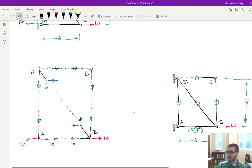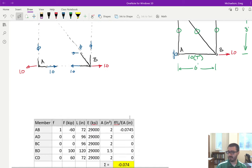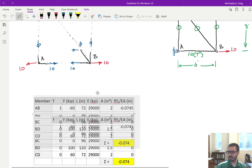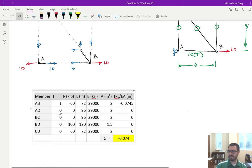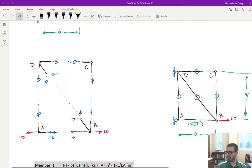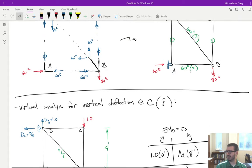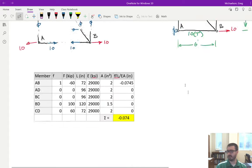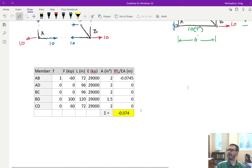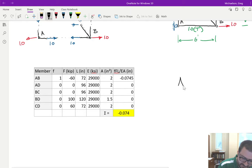So when you start doing your virtual work analysis, here's the table that you set up. If you notice, you've got zero, zero, zero, zero. Most of these are going to be zero. But look what happened here at member AB. Remember, AB is experiencing one in tension. But if we go back up to our real analysis, it was 60 in compression. When we do our tabular computations, we get a negative value.